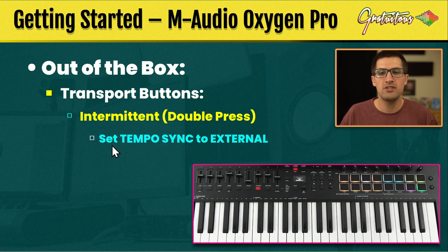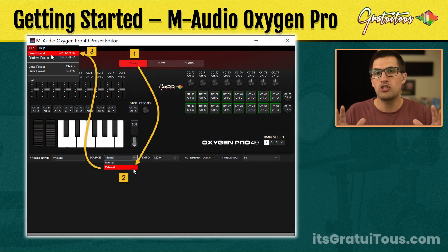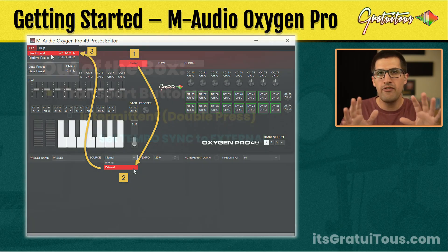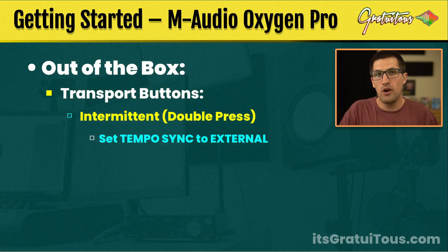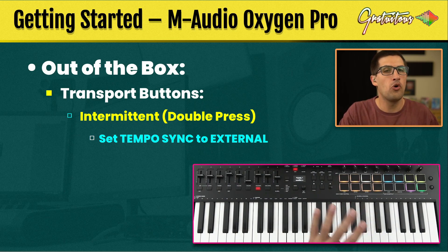How we fix that is you have to set tempo sync to external, and we do that through the M-Audio Oxygen Pro preset editor. It's free from M-Audio, just search for it. You download it, set the source to external, and then you can send a template in. If you don't want to do any figuring out, I have a premium template you can purchase — it's affordable, you simply install it. Once you set tempo sync to external, the Oxygen Pro's transport buttons are no longer intermittent. They are rock solid.